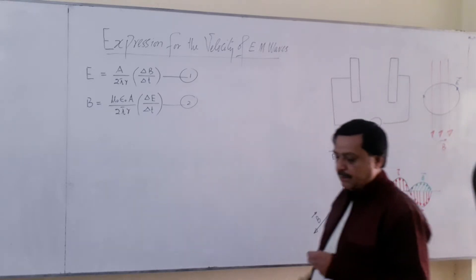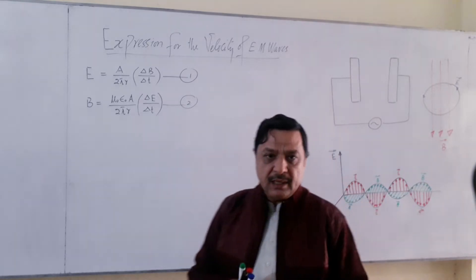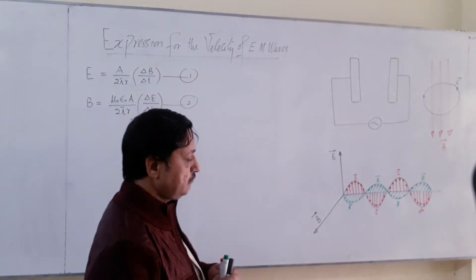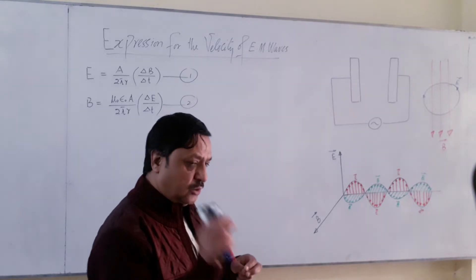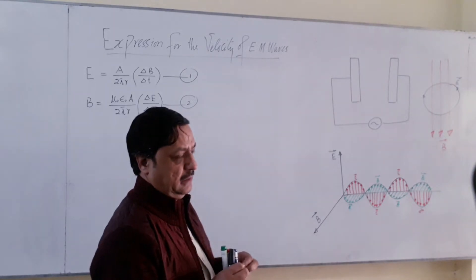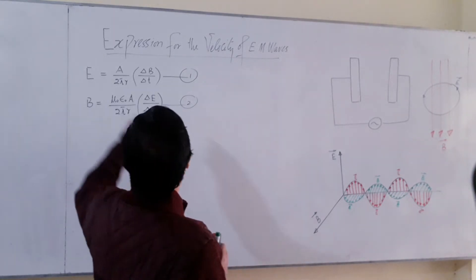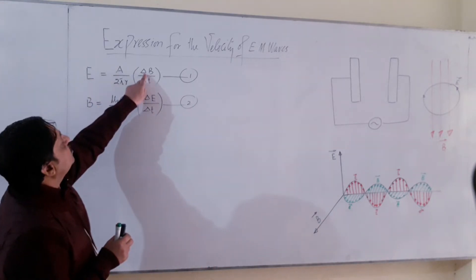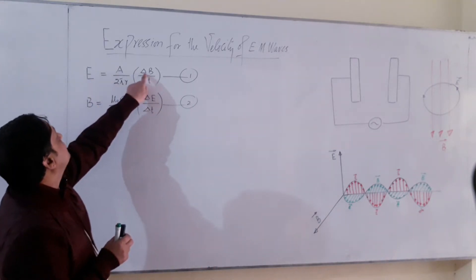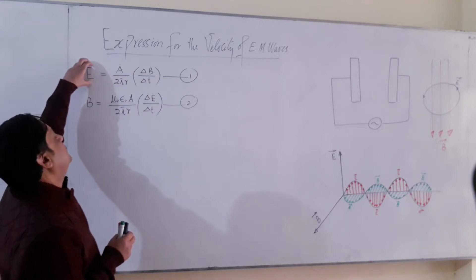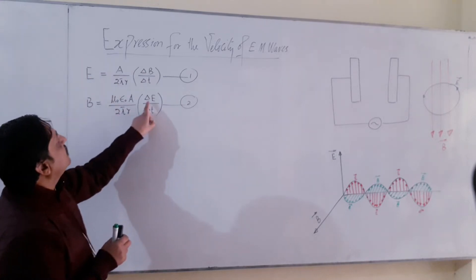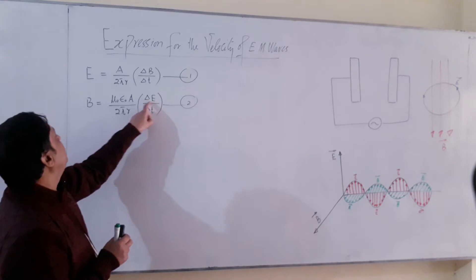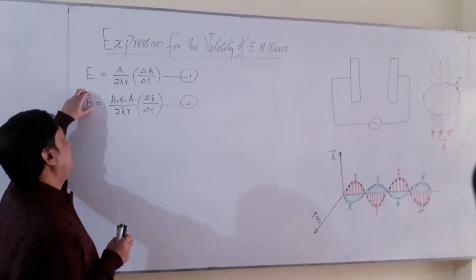Last time we found Maxwell's equations. Maxwell's equations have two equations. The first equation is that whenever you change the magnetic field, there will be an electric field. Number two is that whenever you change the electric field, there will be a magnetic field.